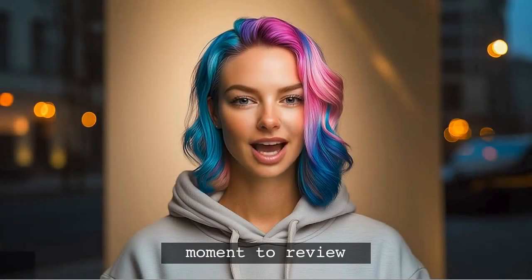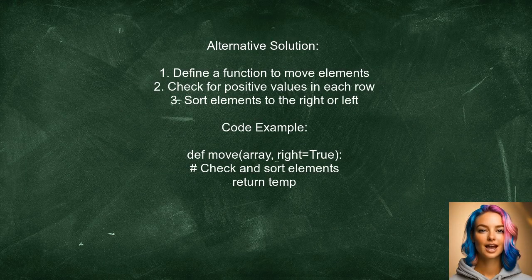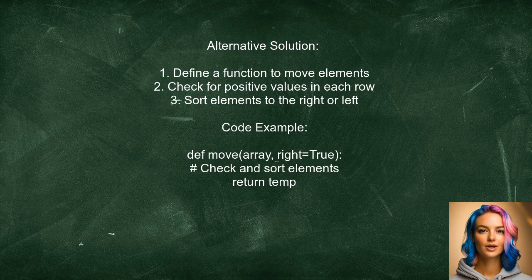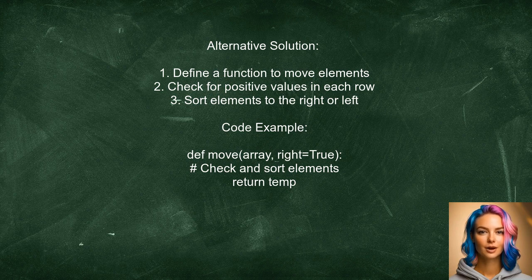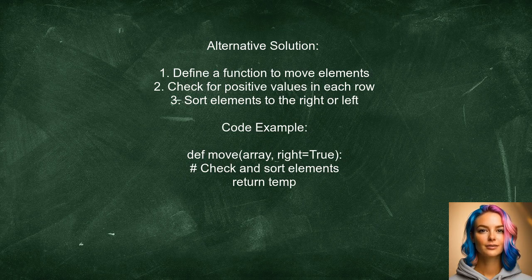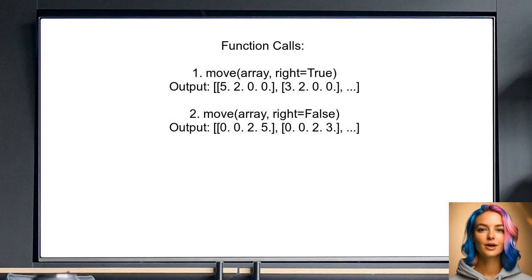Let's take a moment to review another user's answer. An alternative solution, provided by another user, involves defining a function to move elements in the NumPy array. This function checks each row for positive values, and sorts them either to the right or left, based on the specified parameter. The user demonstrates how to call this function, showing results for both right and left justification. The output confirms that the function successfully rearranges the elements as intended.